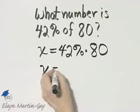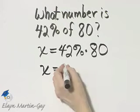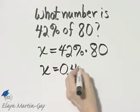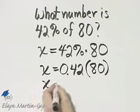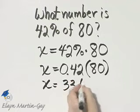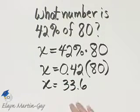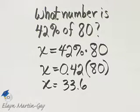Notice this equation is already solved for X. I'll write 42% as an equivalent decimal, and that's 42 hundredths times 80. If you simply multiply these two numbers, you'll have 33.6. So what number is 42% of 80? It is 33.6.